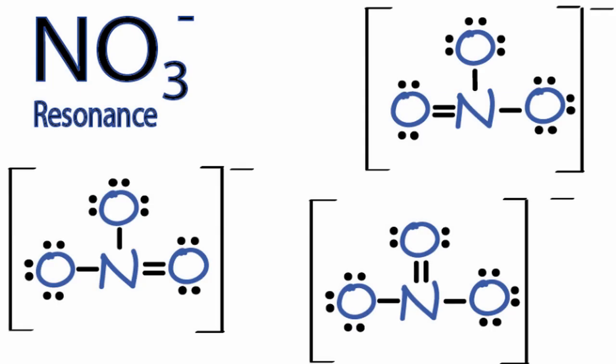In each case, we have octets or full outer shells for all of the atoms in each structure, and we've used the same number of valence electrons in each structure. They're really pretty much the same except where that double bond is. So we call these resonance structures and we can show that with an arrow between each structure. So these are the three resonance structures for NO3-.